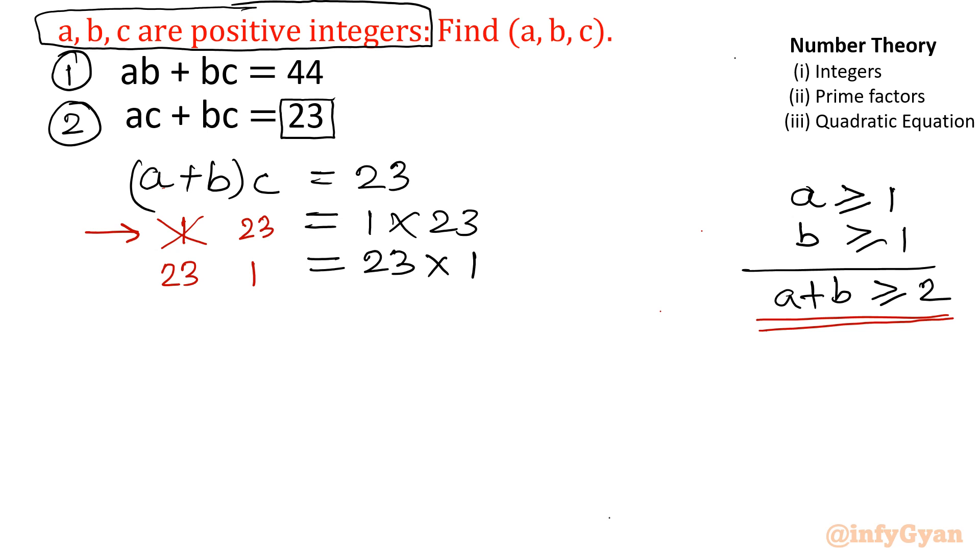It cannot be 1. So this is rejected. So what is left? A plus b equal to 23 and c is equal to 1.